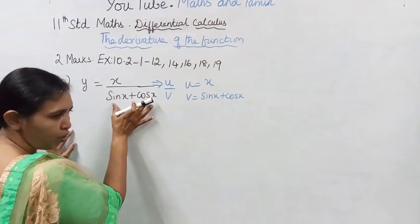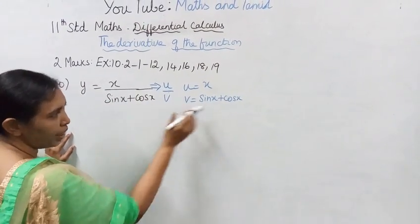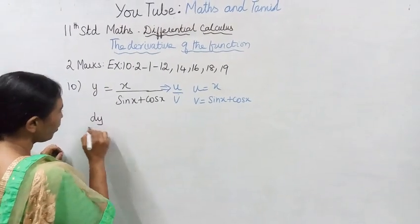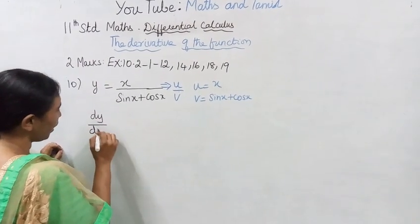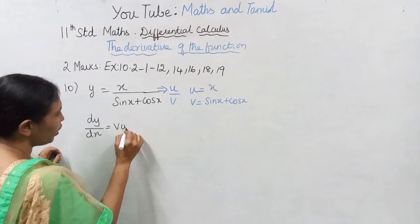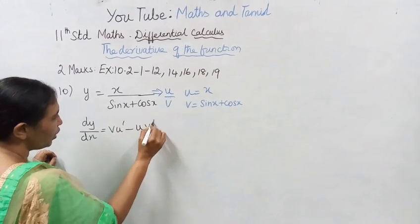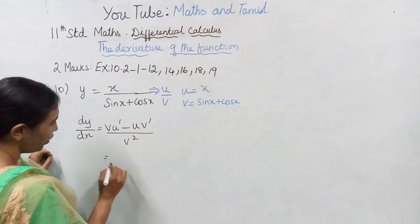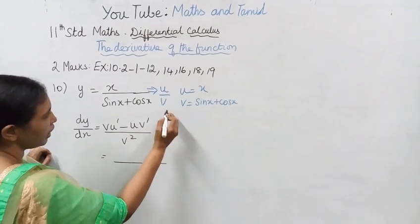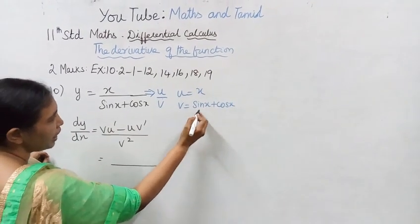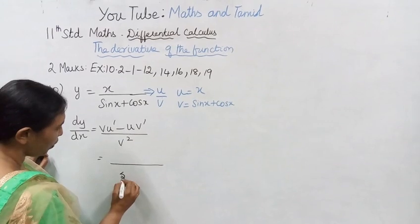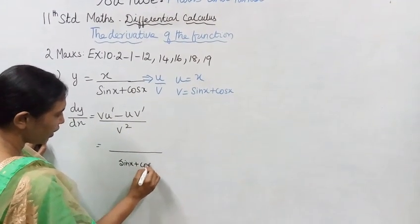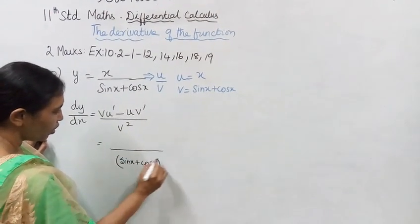The key denominator is fully present. We will find the value of dy by dx. The formula is equal to v times u dash minus u times v dash, divided by v square. v square is sin x plus cos x, the whole square.